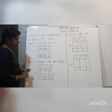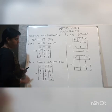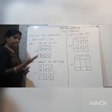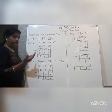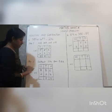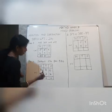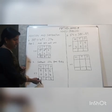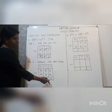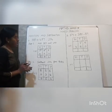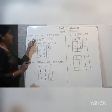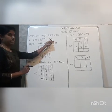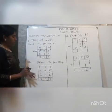Then 8 minus 2. Counting up from 2: 3, 4, 5, 6, 7, 8. So 6. And for the hundreds: we bring down 6. So 652 is our answer after adding those two numbers and then subtracting 234.